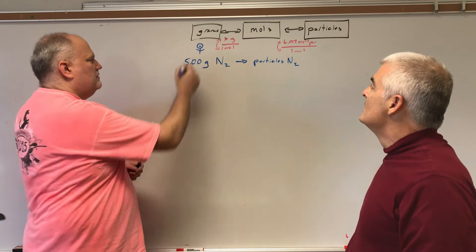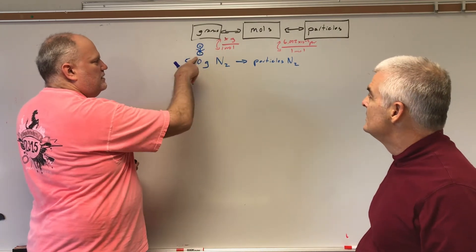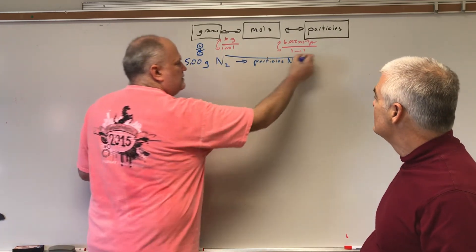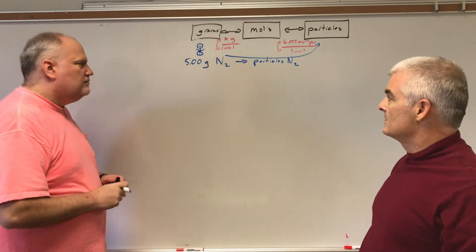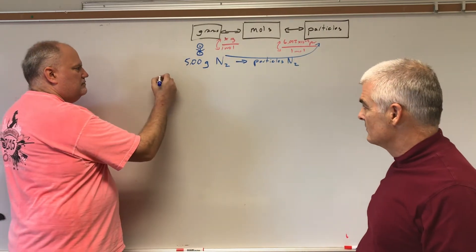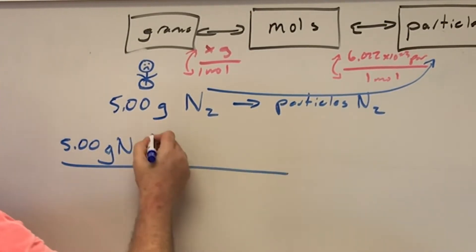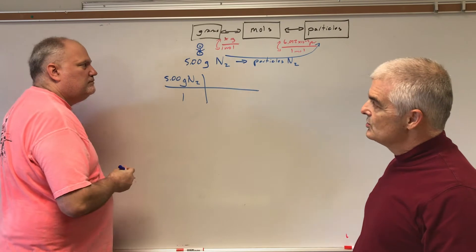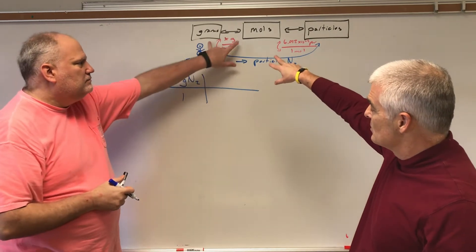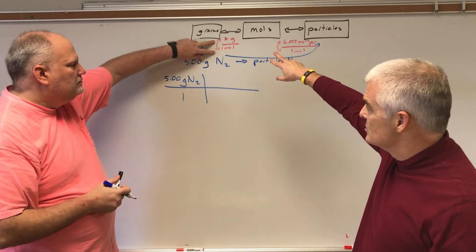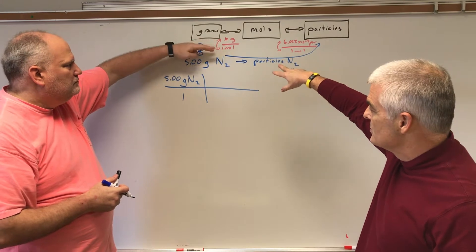This is us right here, and we want to go all the way to here. So we have to go first to moles. We start with what we know as a fraction over one, right? So 5.00 grams of N2 over one. Now we need to convert from grams to moles. Do we leave this fraction grams over mole, or do we flip it?